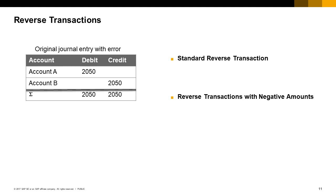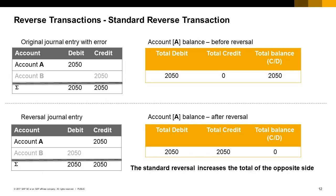The method you choose also determines the automatic reversal journal entry created for cancelled marketing documents. The standard reverse transaction causes the system to post the debit in error as a credit and the credit in error as a debit. This corrects the balance of the accounts. However, the standard reverse transaction causes an additional increase in the totals on the debit and credit sides, which might be misleading. On the left side of the image you can see an example of a journal entry with error and the corresponding reversal entry. On the right you can see the effect of the reversal entry on the balance of account A.